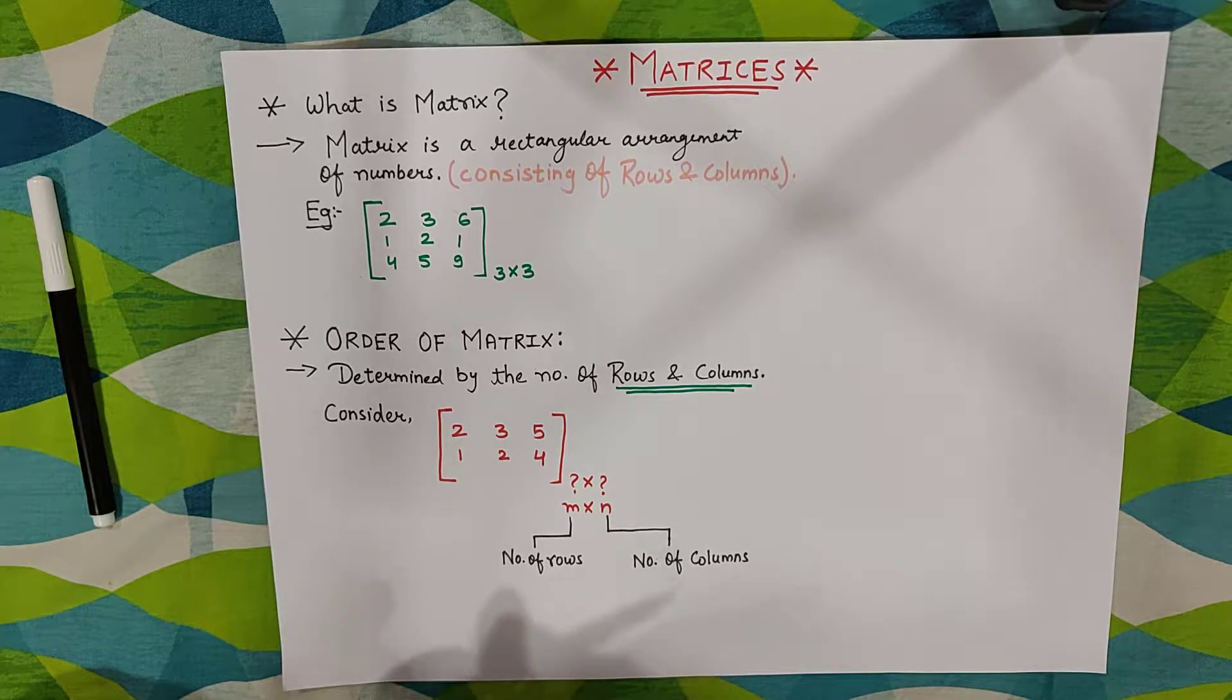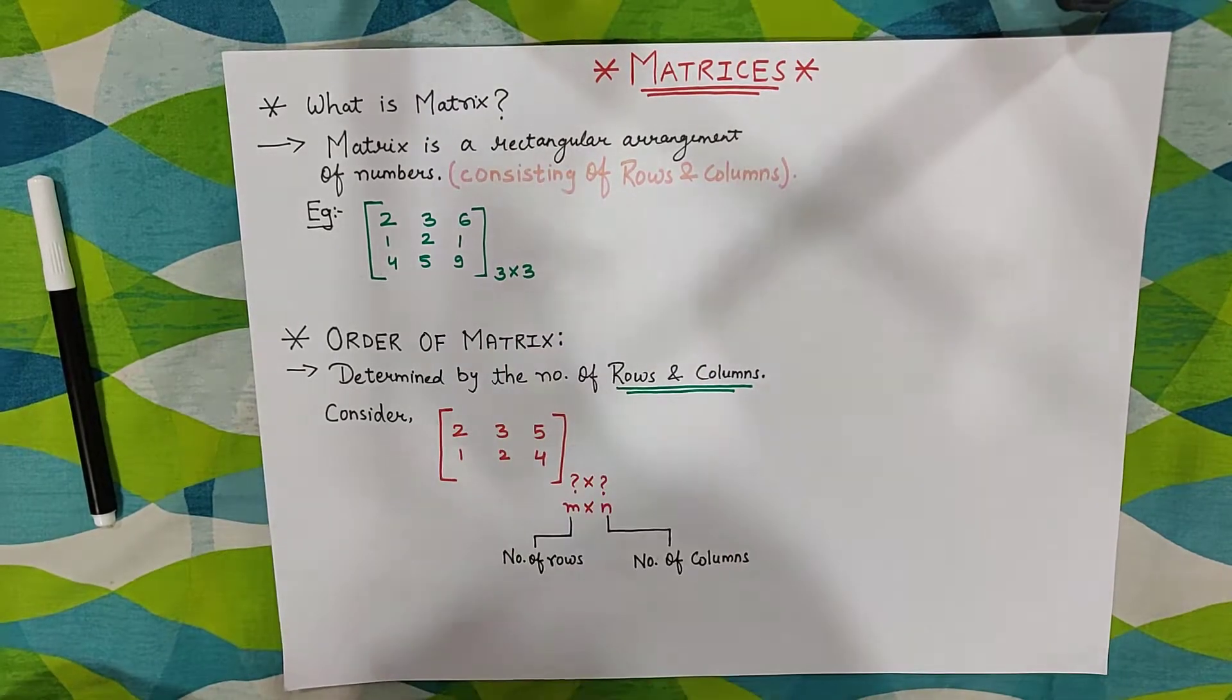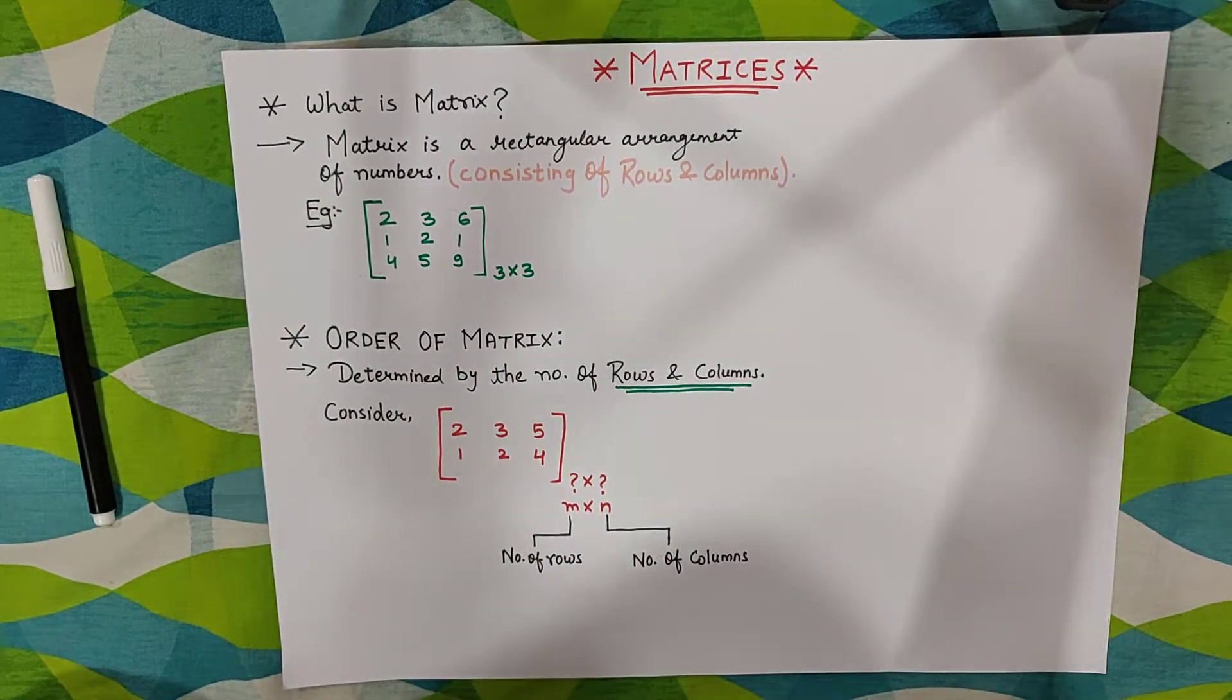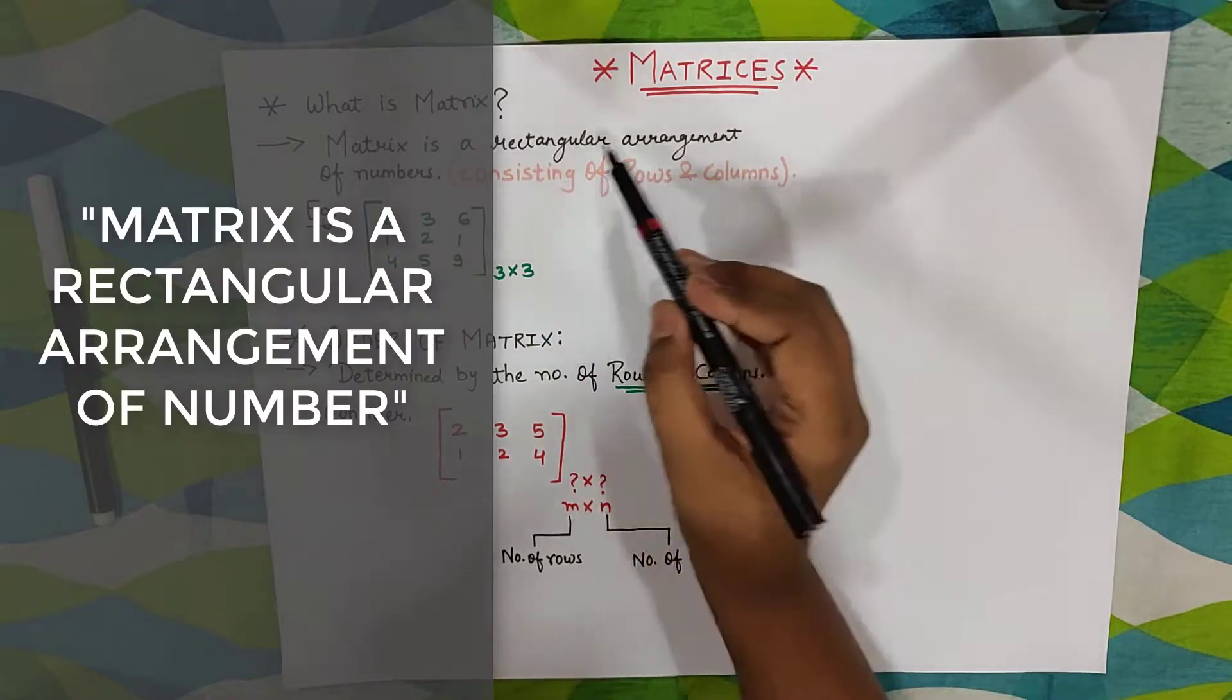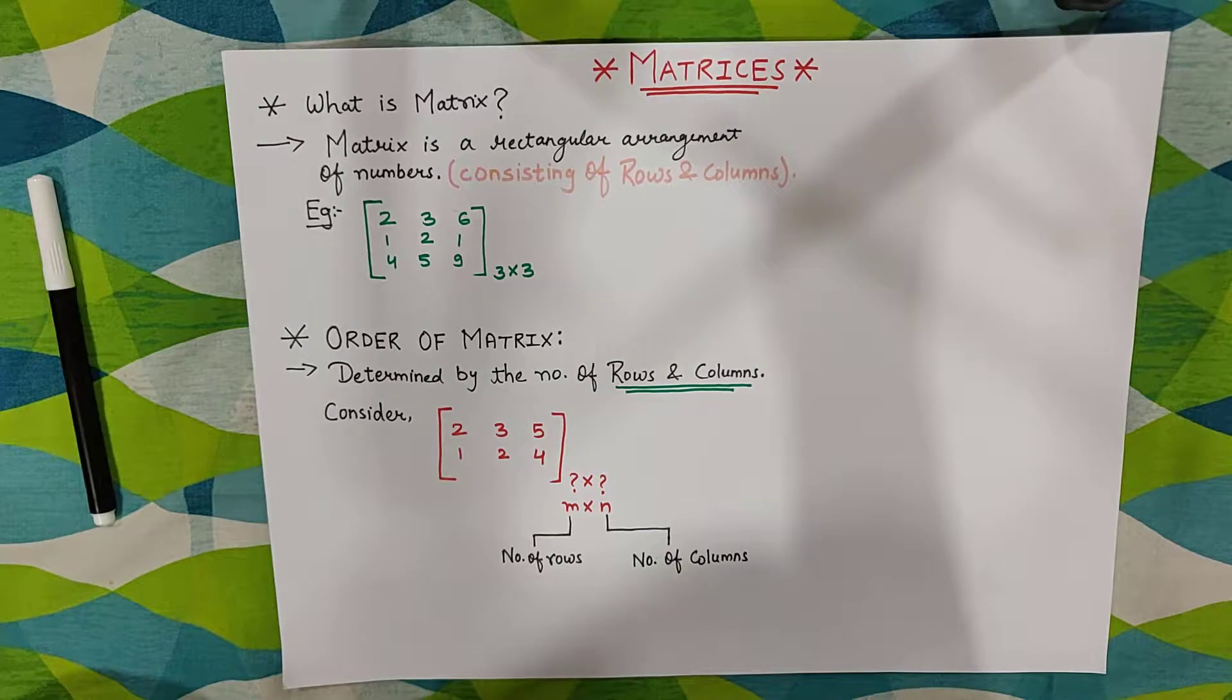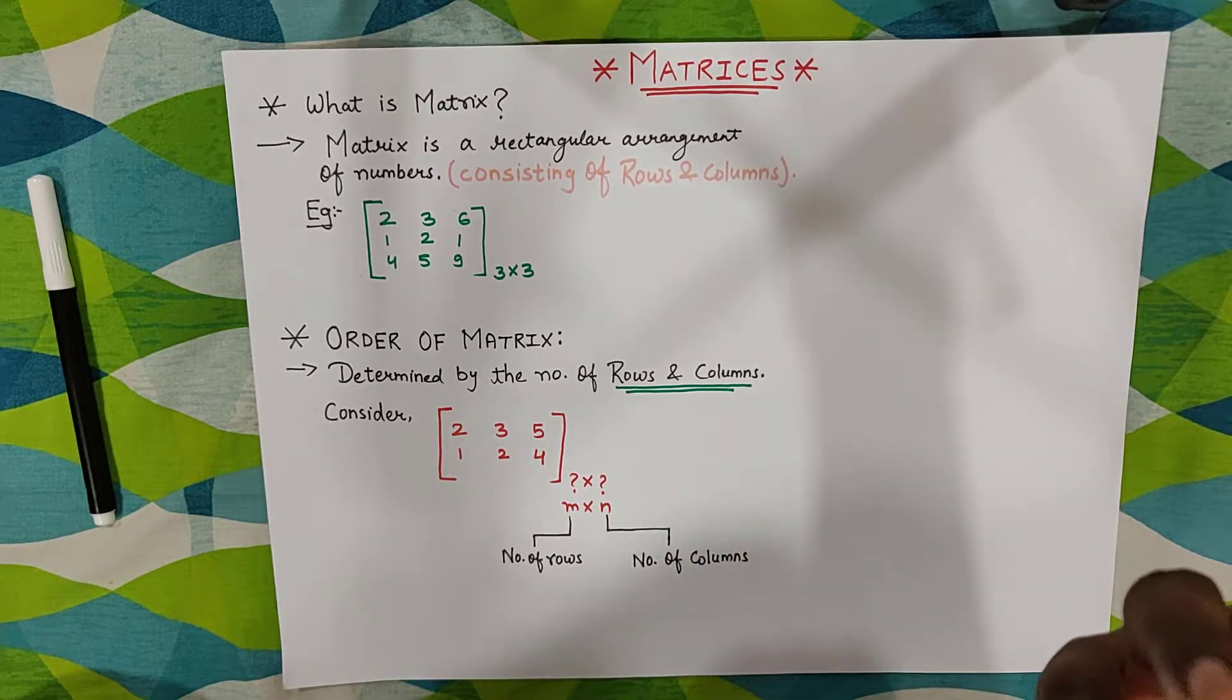Now you are thinking, what is this matrix? First of all, I will tell you a very important thing: matrix is a rectangular arrangement, rectangular arrangement of numbers or elements.